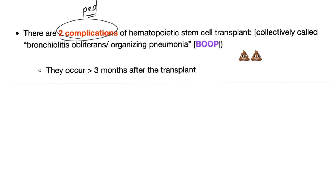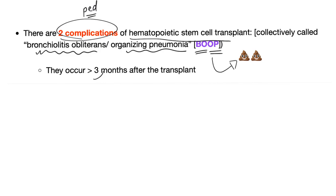Now we're done with bronchiolitis in pediatric patients. Let's talk about adults. There are two complications of hematopoietic stem cell transplant, collectively called bronchiolitis obliterans and organizing pneumonia — two separate diseases. They occur more than three months after transplant.